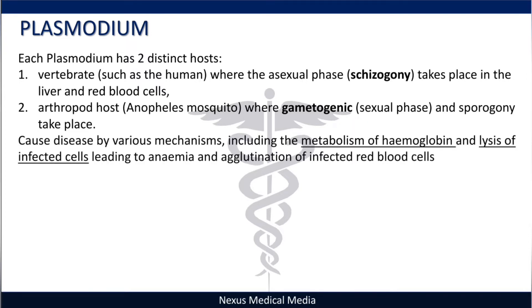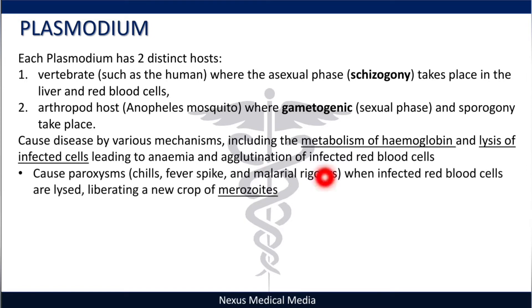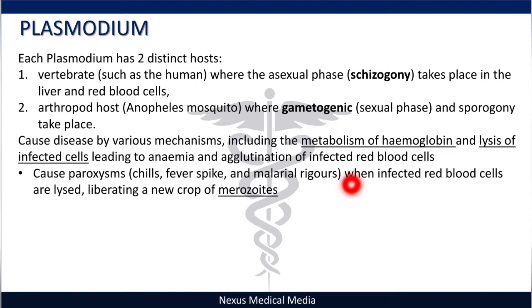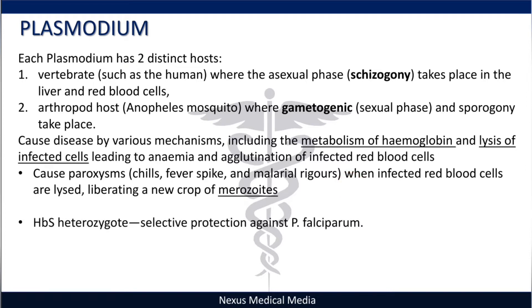Plasmodium species cause disease by various mechanisms including metabolism of hemoglobin and lysis of infected cells, leading to anemia, and agglutination of infected red blood cells. They cause paroxysms — chills, fever spikes, and rigors — when infected red blood cells rupture, liberating a new crop of merozoites, causing body temperature to rise.